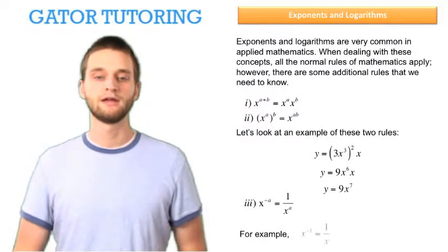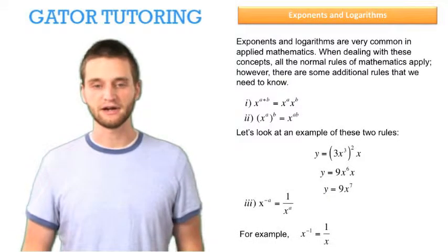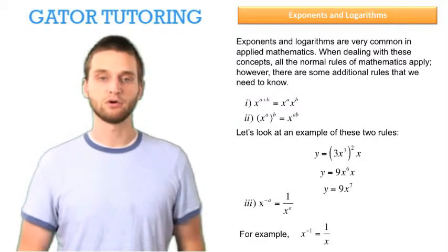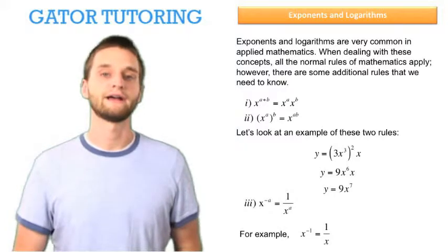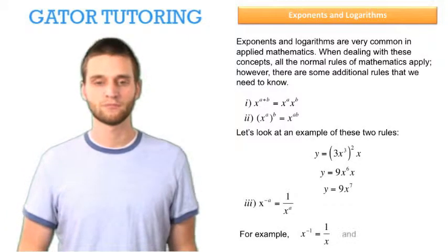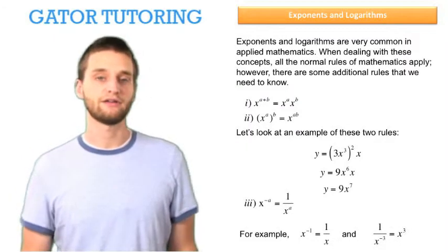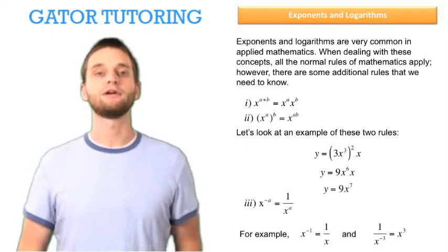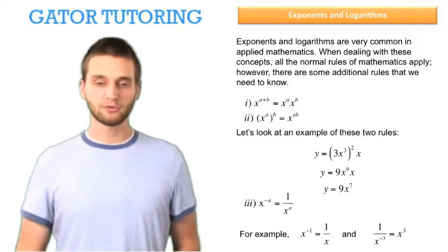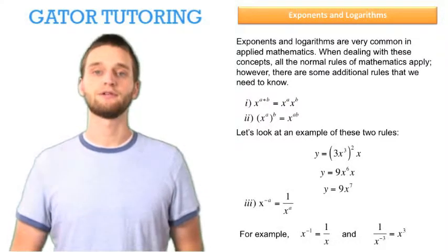For example, if we have x raised to the negative 1 and this is in the numerator, when we put it on the denominator, we need to change the sign of the negative 1, so it becomes 1 over x raised to the positive 1, which is just 1 over x. Another example is if we had 1 over x raised to the negative 3 — so x raised to the negative 3 is on the denominator — and if we want to bring it up to the numerator, we need to change the sign on the exponent, so it becomes x raised to the positive 3.